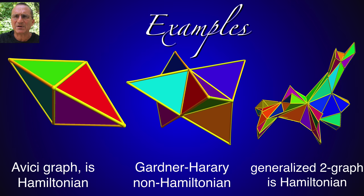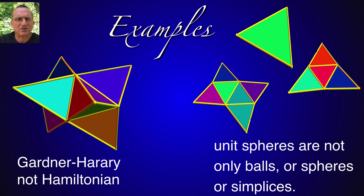But it's not always the case. There's no relation in general between barycentric refinements for general graphs. The Avicii graph to the left is Hamiltonian. Gardner-Harary graph that's a prototype of a non-Hamiltonian graph. To the right we see a generalized two graph which is Hamiltonian.